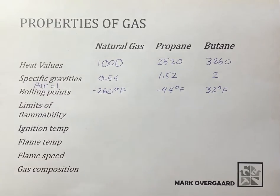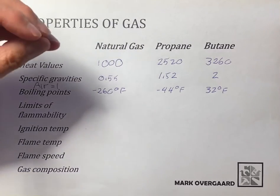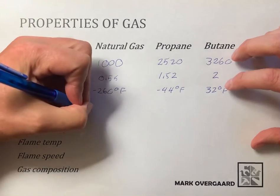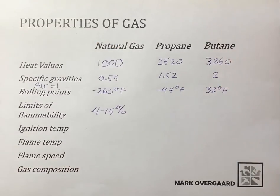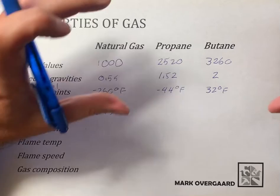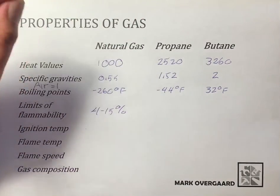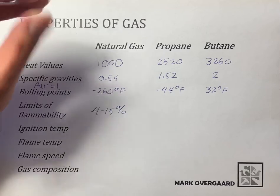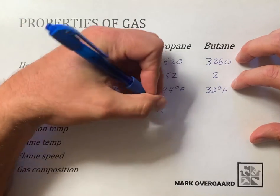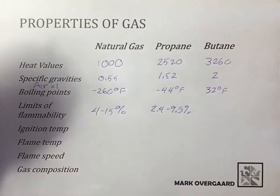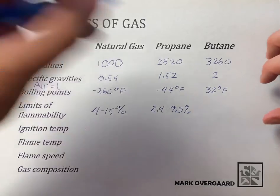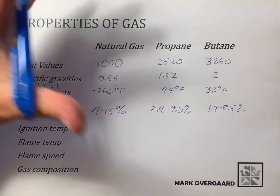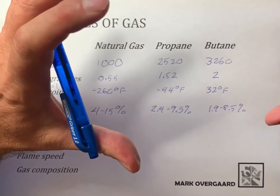Limits of flammability — this is the percentage of gas in air required for combustion. For natural gas it's 4 to 15%, meaning you need between 4% and 15% natural gas in the air for it to combust. That's not a lot to work with, but that's your limits of flammability. Propane is a little less: 2.4 to 9.5%. Butane is even narrower: 1.9 to 8.5% in air for combustion to occur.